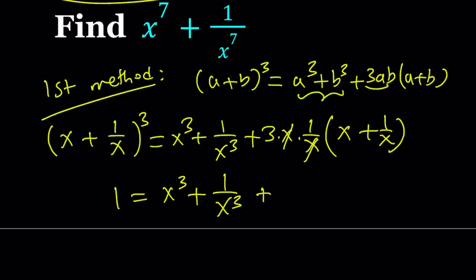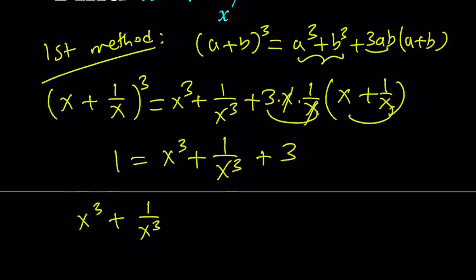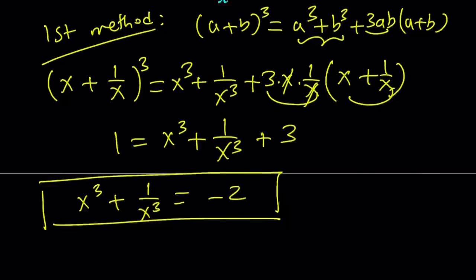My goal is to find x cubed plus 1 over x cubed from here. And I end up with 3 times 1, which is 3. So from here, we get x cubed plus 1 over x cubed equals negative 2. That's the first thing I would need to use.